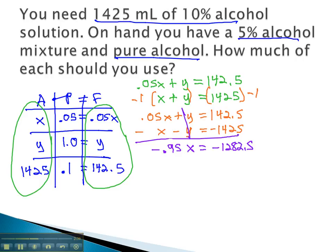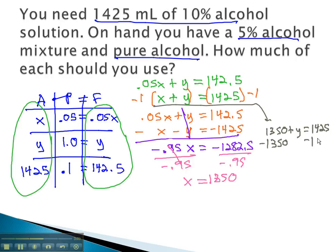To get x alone, we simply divide both sides by negative 0.95, and we find out x, the amount of the first solution, is 1350. To find the second solution, we plug into the equation: 1350 plus y equals 1425, and subtract 1350 from both sides. And we find out y is 75.